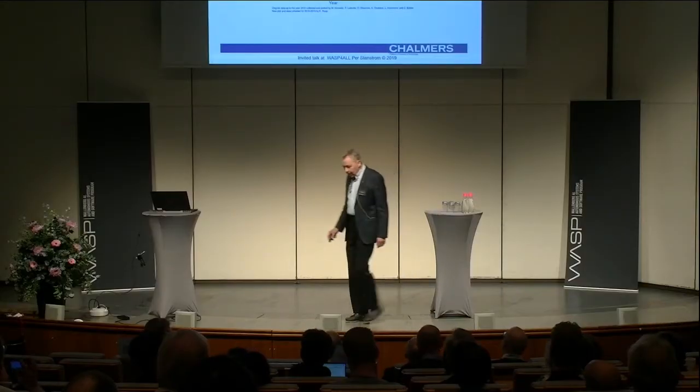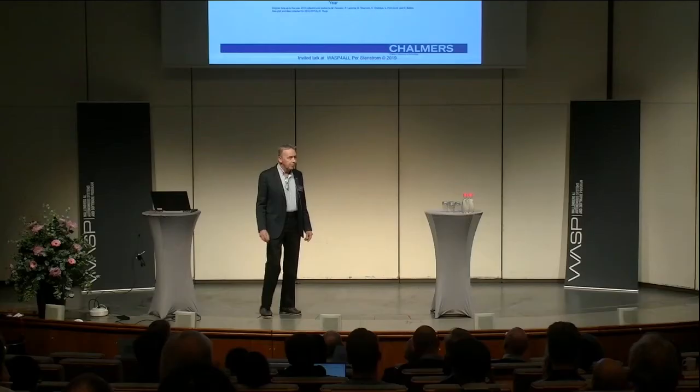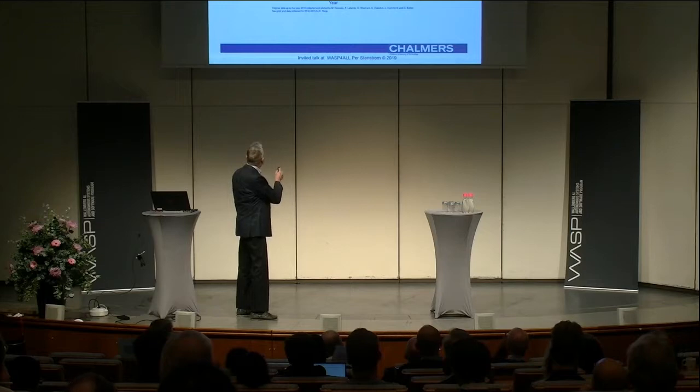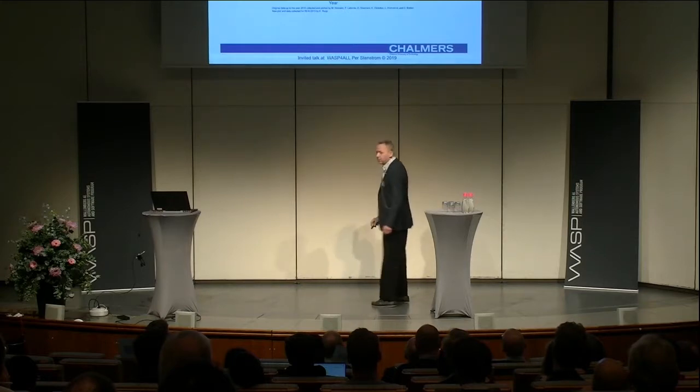This graph shows a number of trends we have seen in computer architecture developments. We can see the growth in the number of transistors on a microprocessor chip over time. The y-axis here is logarithmic, so in fact there's been an exponential growth in the number of transistors on a chip — we are now up to several billions of transistors. This used to be referred to as Moore's Law, where we have been doubling the number of transistors every two or three years.